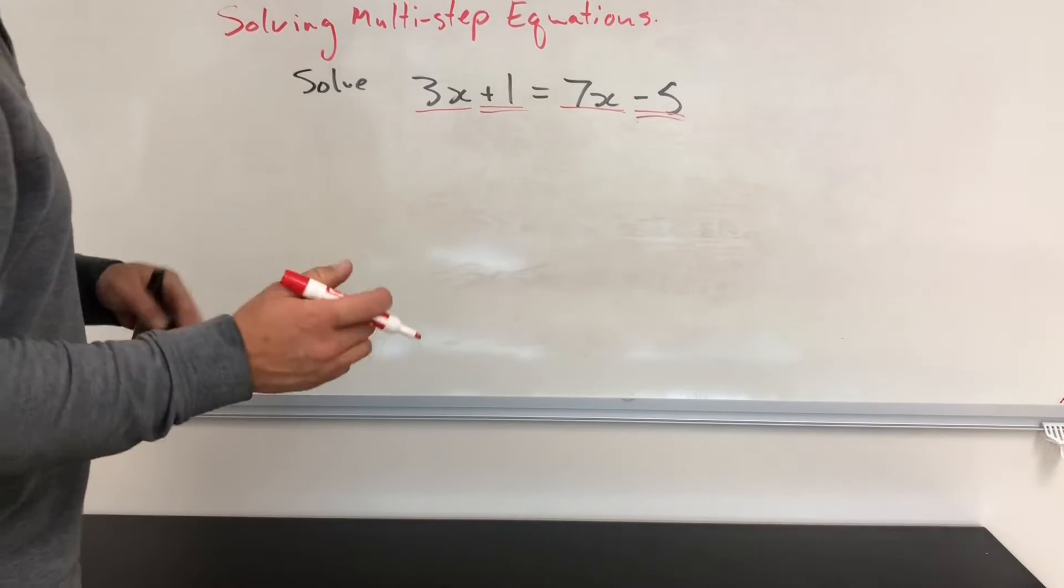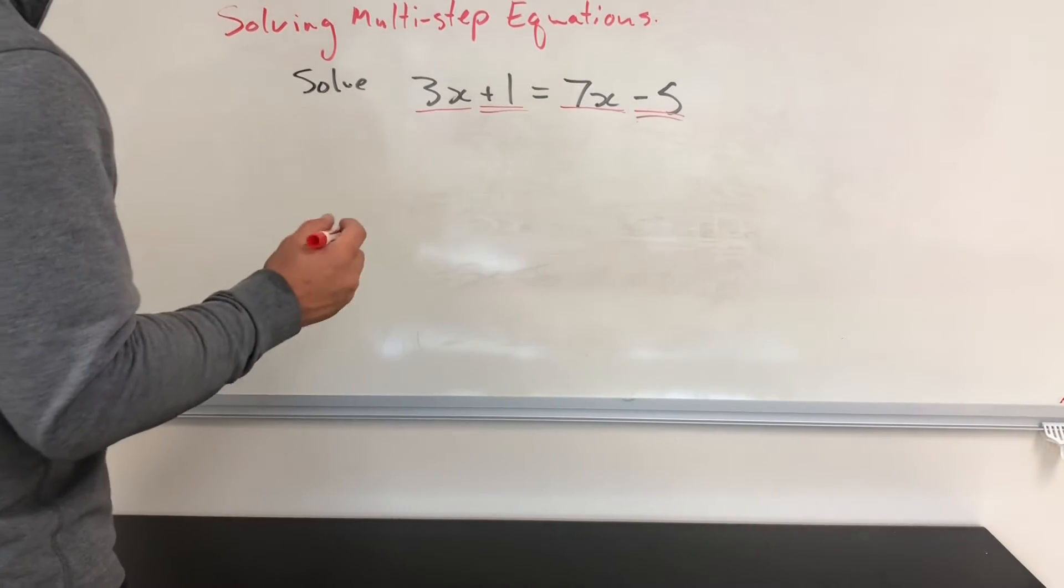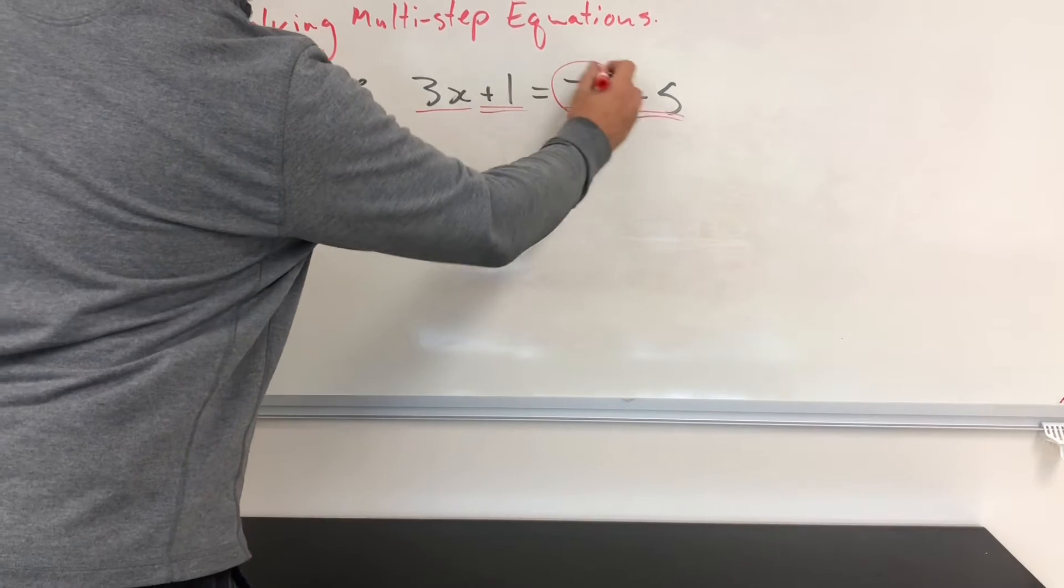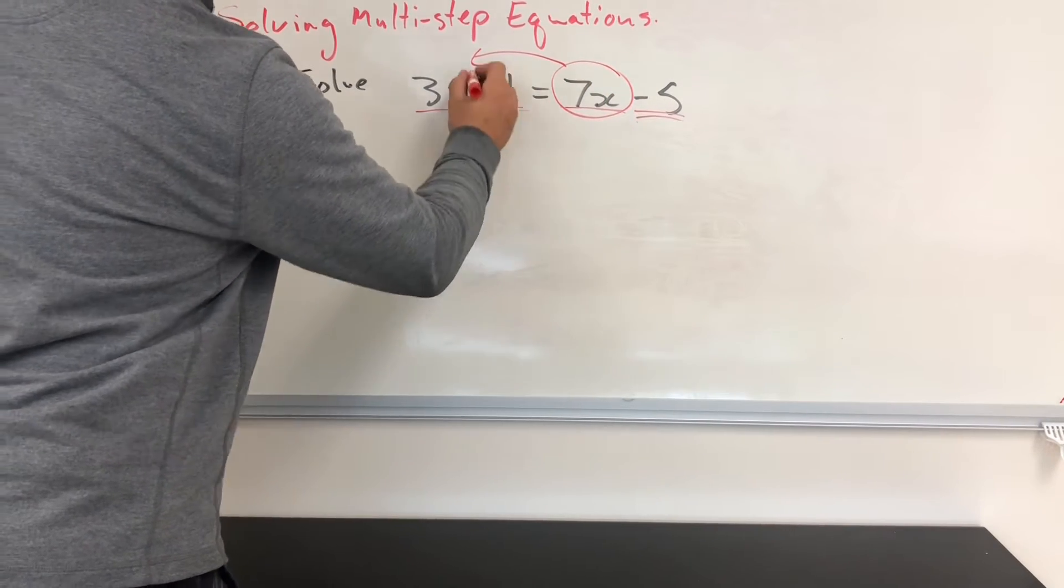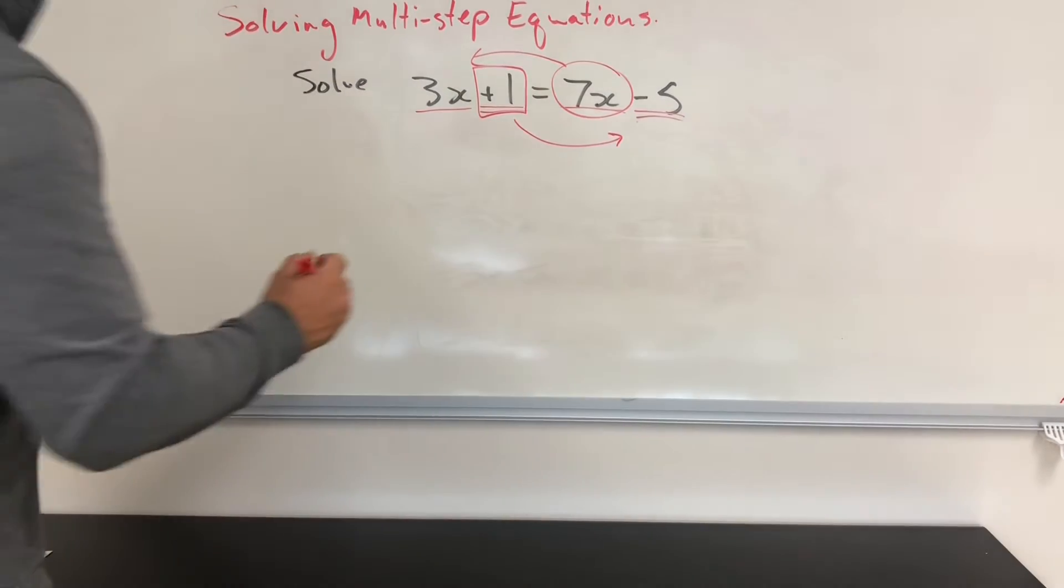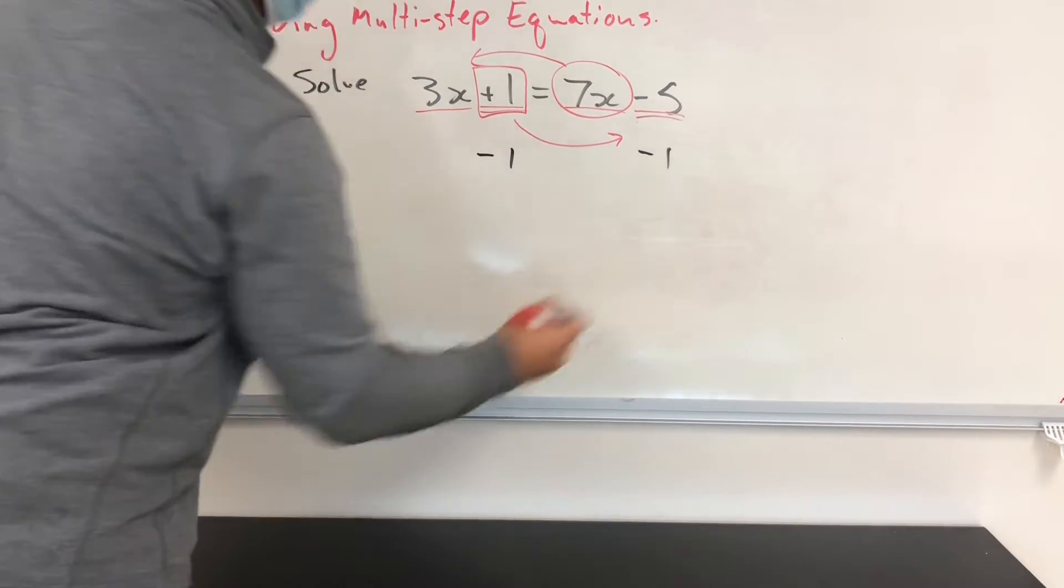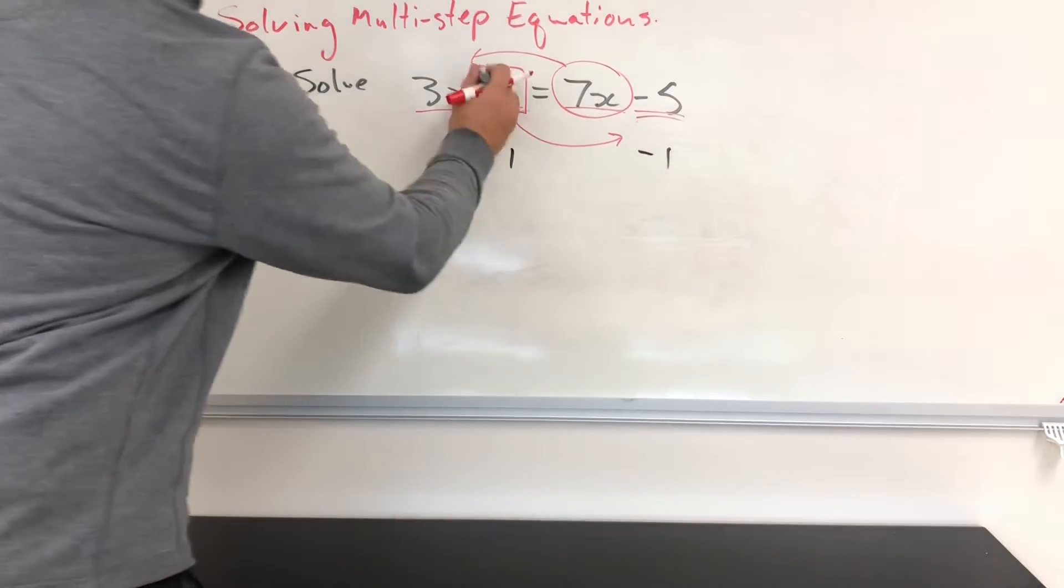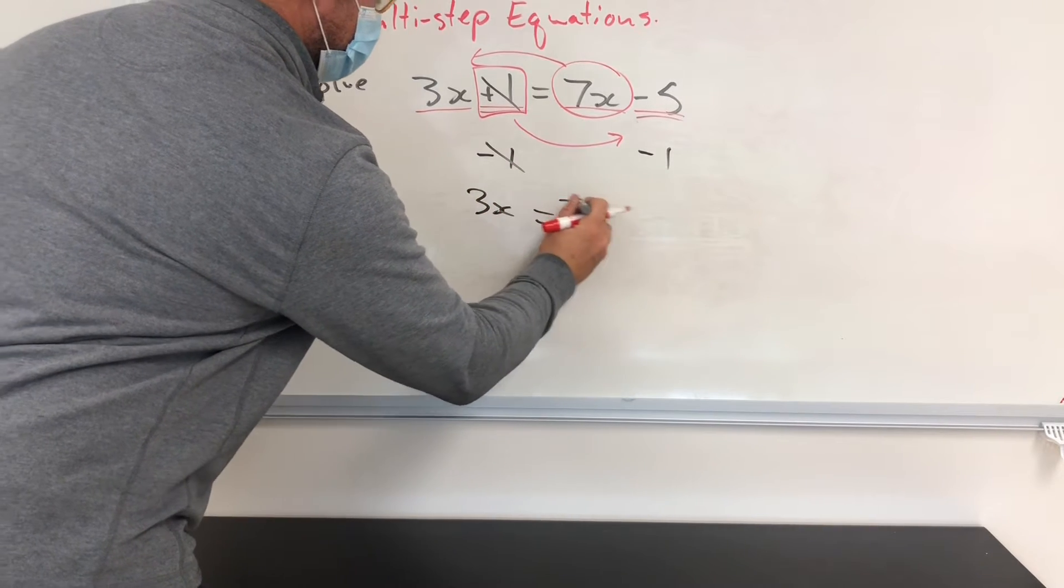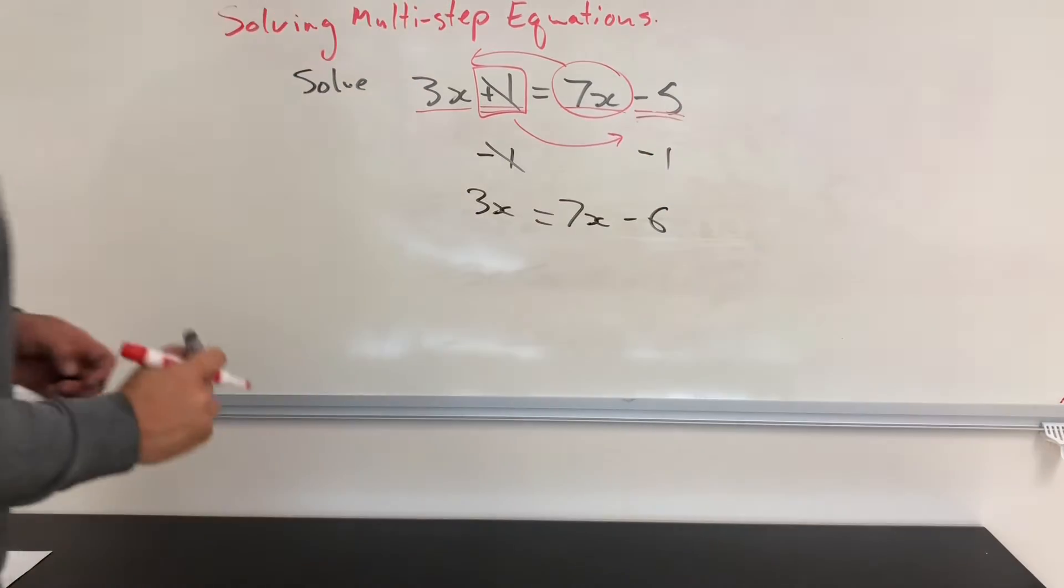So some people prefer to have their variables all the time on the left. Some people prefer on the right. It doesn't matter at all. But I'm going to go ahead and move terms. So I'm going to move this 7x to the left and I'm going to move this 1 over to the other side. And I'll do that by subtracting 1 from both sides. What I do to one side, I must do to the other. So those will cancel and I'll be left with 3x is equal to 7x minus 6, because minus 5 minus 1 is minus 6.